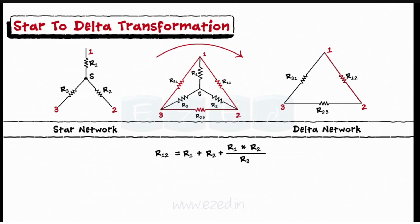Now, to find the delta resistance, we consider both the suffixes as two resistors. Thus, R1 plus R2 and then the ratio of product of the two resistors upon the remaining resistor, thus R1 into R2 upon R3.